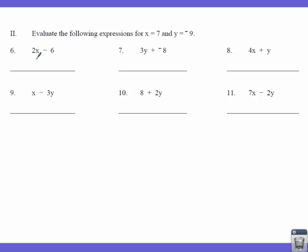For this one — 2 times some number minus 6 — I should see 2 times 7, then minus 6. We do 2 times 7 first, which is 14, minus 6. So 14 minus 6 gives you 8. And there's your final answer.